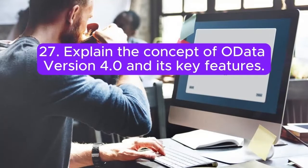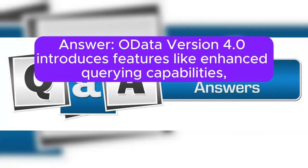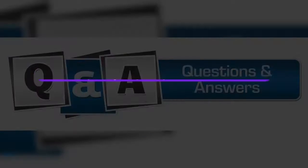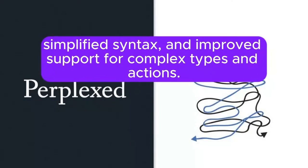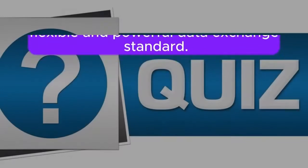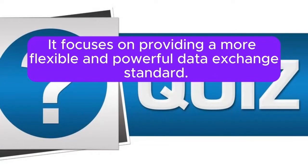Question 27: Explain the concept of OData version 4.0 and its key features. OData version 4.0 introduces features like enhanced querying capabilities, simplified syntax, and improved support for complex types and actions. It focuses on providing a more flexible and powerful data exchange standard.